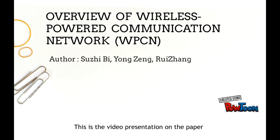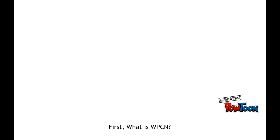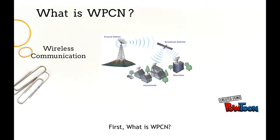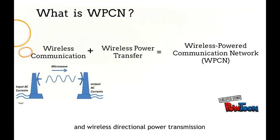This is the video presentation of the paper titled Overview of Wireless Power Communication Network. What is WPCN? It is a combination of wireless communication network, for example, mobile network and wireless directional power transmission.